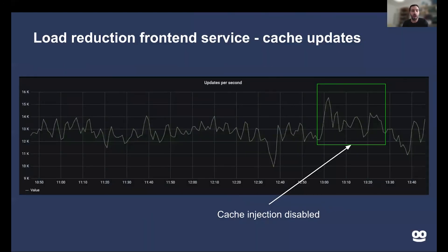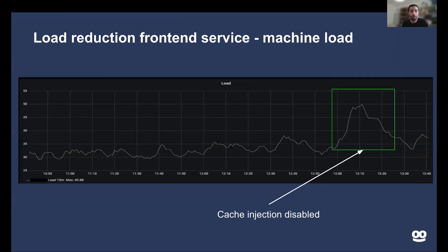To show the impact, I took the same cache-update graph and closed the cache injection feature for a specific time window. During that time, because our TTLs reduced to compensate for the missing feature, we see roughly a 10% increase in the update count. That on its own doesn't seem very impressive, but looking at the load graph of that specific machine, the load increased by 30%. Looking at this graph, you can understand that this feature is a game changer for us at Taboola — having the ability to reduce load by this much on thousands of machines is insane.